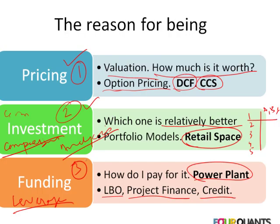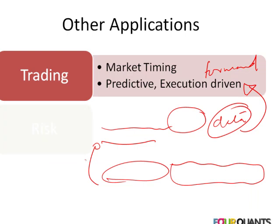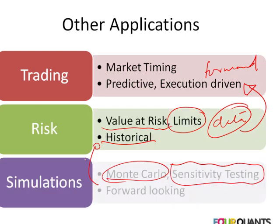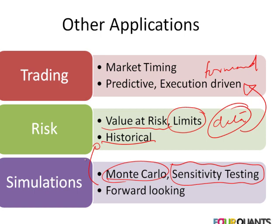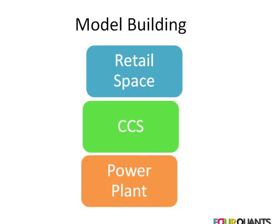Quick review: pricing, investment, funding, trading, risk, and simulation — these are the six primary applications we focus on. The objective of our course is to give you a good flavor of all six areas. We will use the three cases — the CCS case, the retail space case, and the power plant case — to give you a good idea of how these models come together.